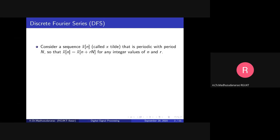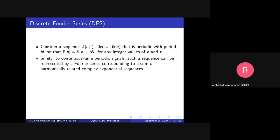Consider a sequence x̃(n) that is periodic with period N, so that x̃(n) equals x̃(n + rN) for any integer r. That means we consider some periodic sequence x̃(n) with period capital N. Similar to continuous time periodic signals, these kind of periodic sequences can be represented by a Fourier series corresponding to harmonically related complex exponential sequences.